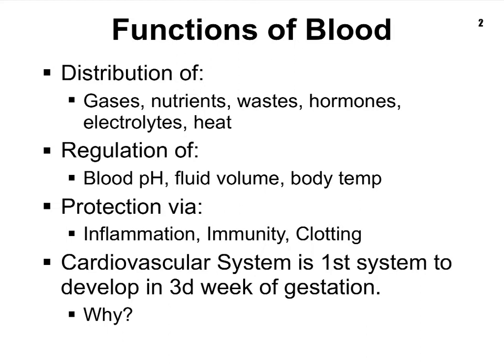Another important function is that our blood carries around heat, so it plays an important role in regulating our body temperature. Our blood also very carefully controls its own pH, aside from body temperature, as well as the fluid volume in our body — whether the blood volume itself, the volume of lymph, the extracellular fluids around the cells, or even the intracellular fluids.